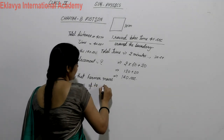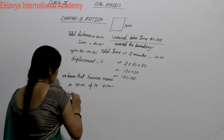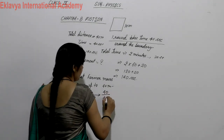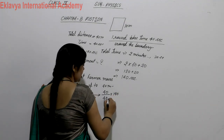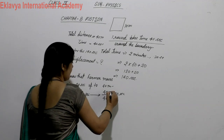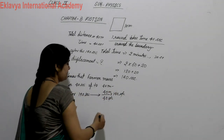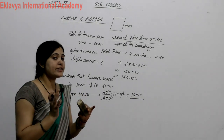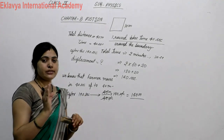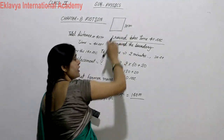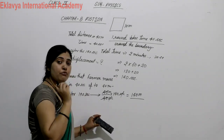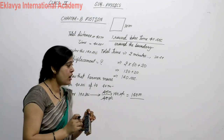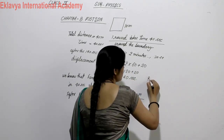The farmer covers up to 40 meters in 40 seconds. After 140 seconds, he covers 140 meters. Dividing 140 meters by 40 meters per rotation, we get the number of rotations. Position = 140 ÷ 40 = 3.5 rotations. This means he completed 3 full rotations and is now halfway.